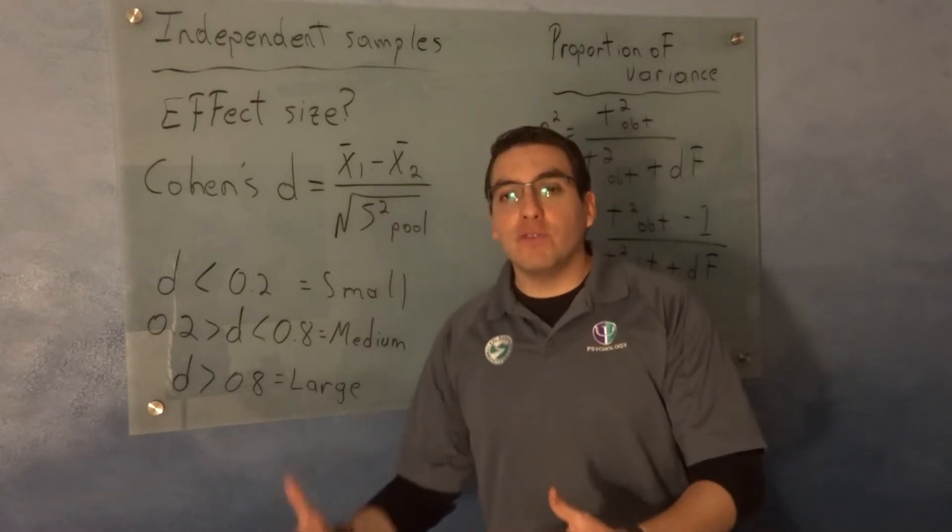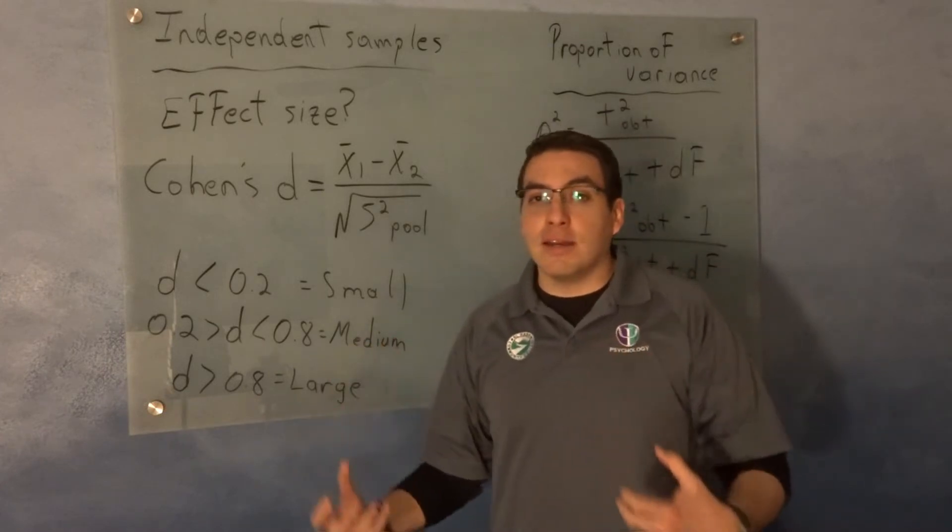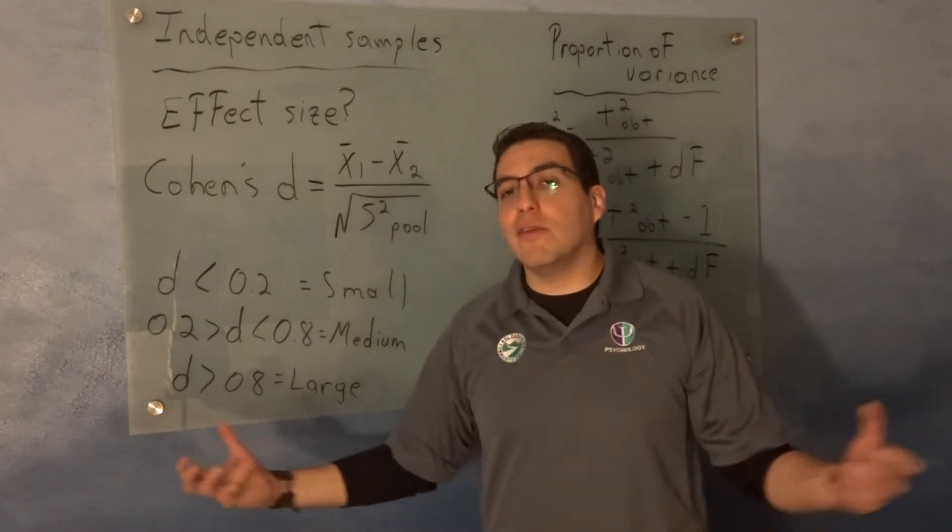It's not enough to reject a null hypothesis, you also want to show that your effect is big enough. Because if it's not big enough, it could have happened by accident.